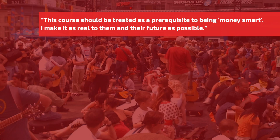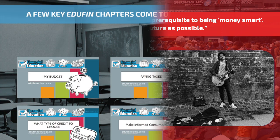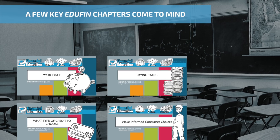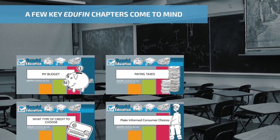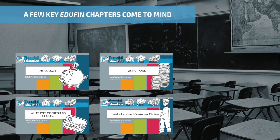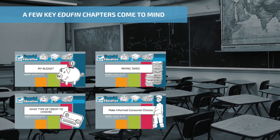This course should be treated as a prerequisite to being money smart. I make it as real to them and their future as possible. Money smart implies dealing with specific situations that involve money and ones that students are likely to face. A few key Edufan chapters come to mind — chapters that contain good examples of students learning how to use money in realistic ways, involving situations they're living through right now.